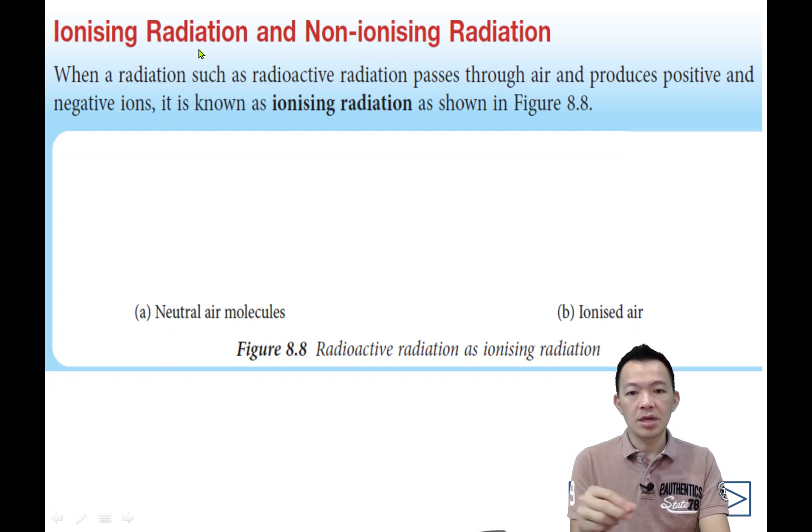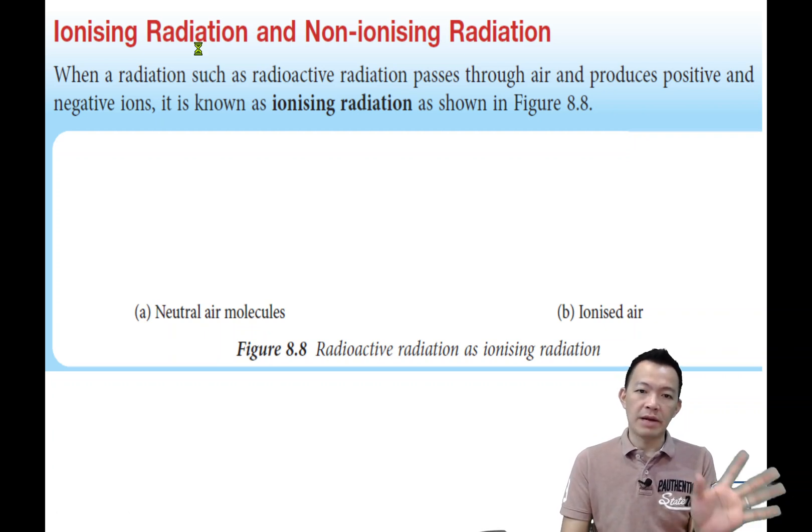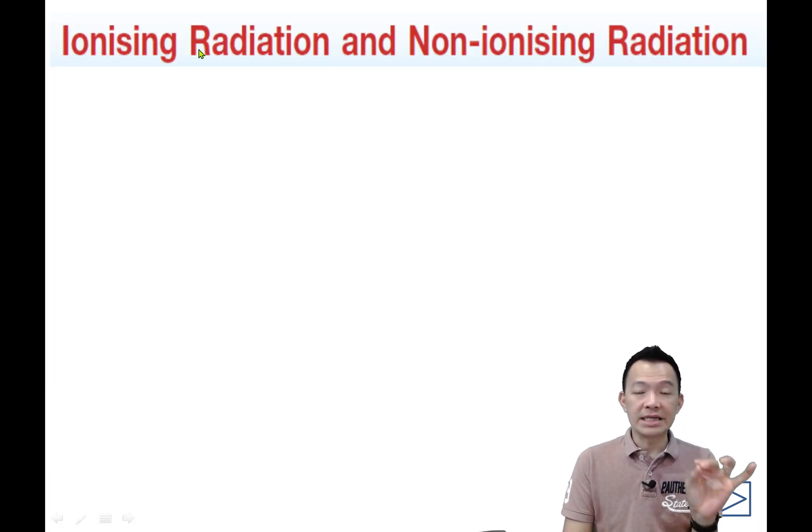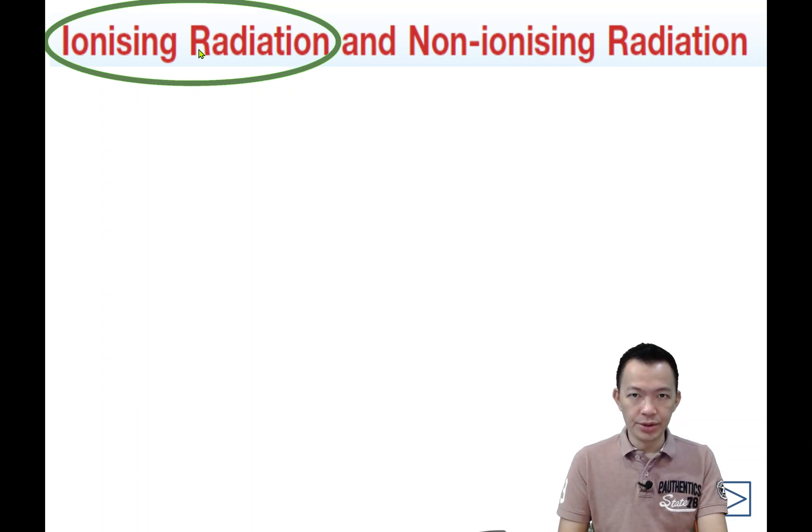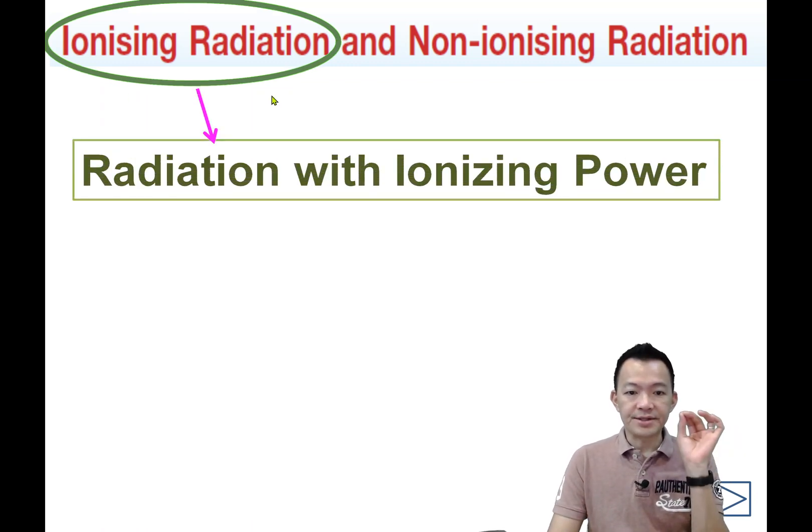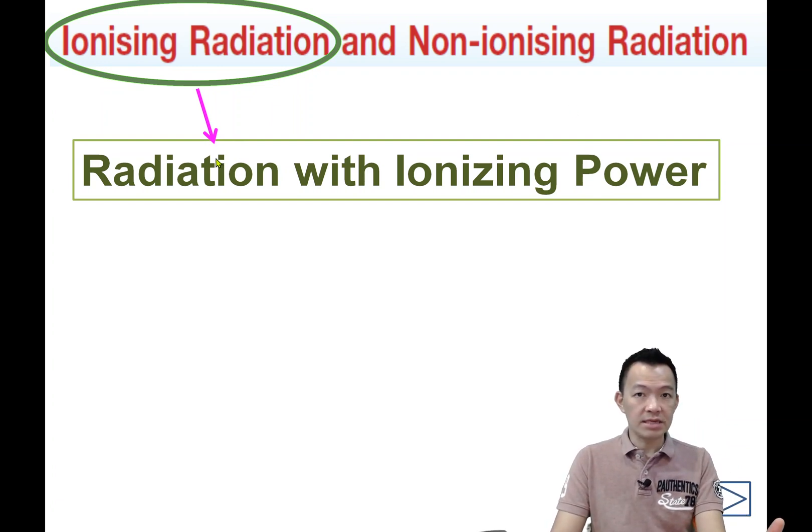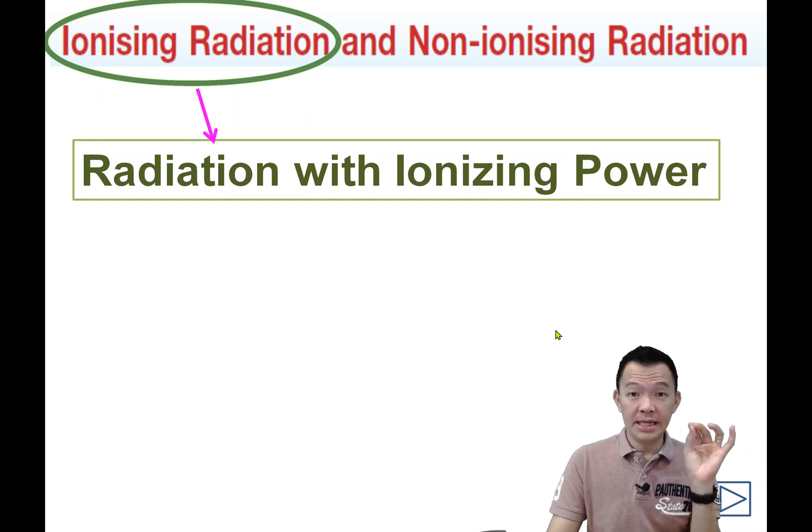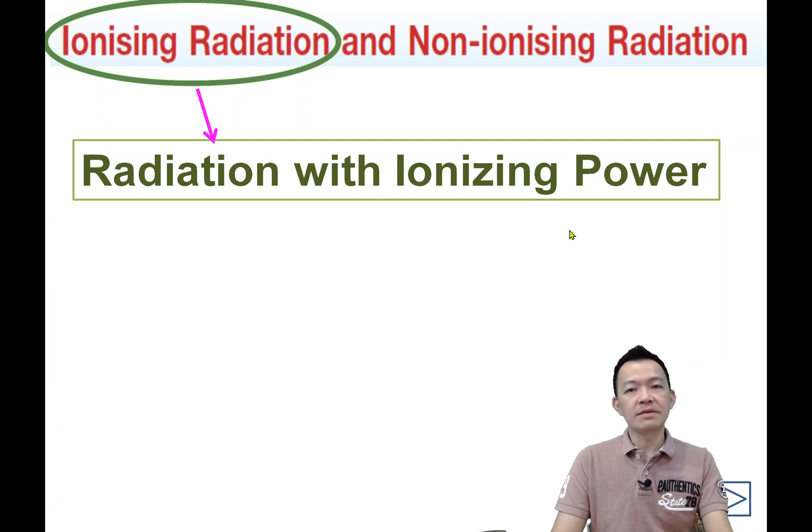What's meant by ionizing radiation? Ion means 离子, ionizing 离子化, radiation 放射线. So ionizing radiation and non-ionizing radiation. This is radiation with ionizing power, a type of radiation that can create ions.